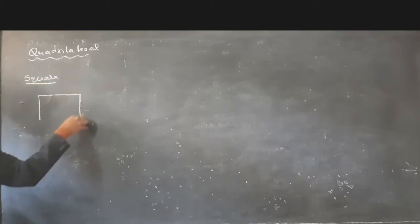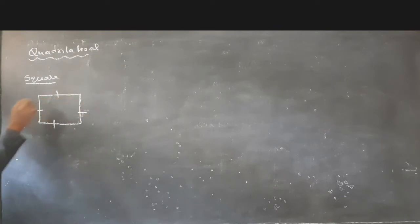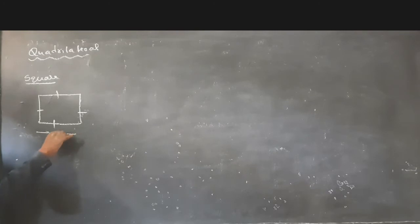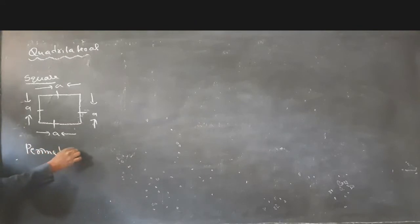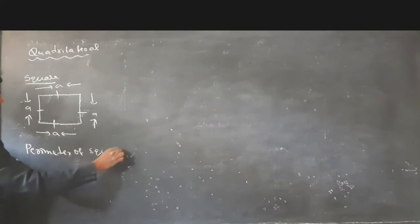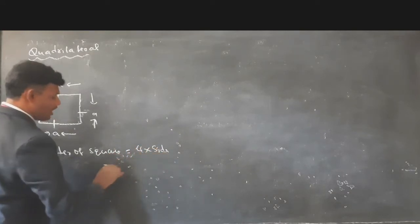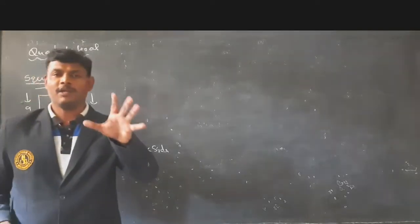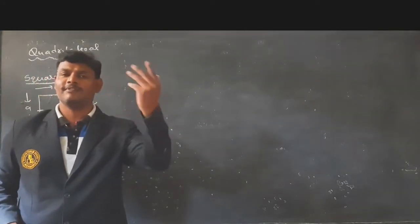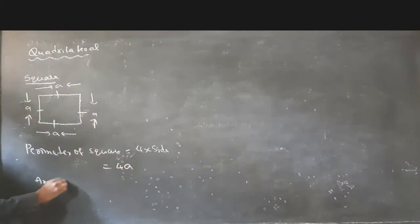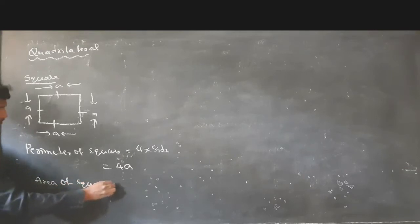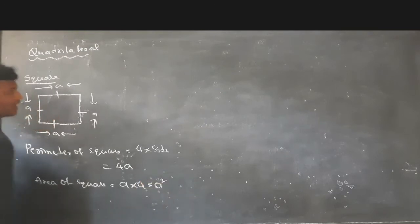In a square, all sides are equal — the length of all sides are equal. If one side is A, then all sides are A. The perimeter of a square is the sum of all sides, which is 4 into A, that is 4A. The area of a square is side into side, which is A into A equal to A square.